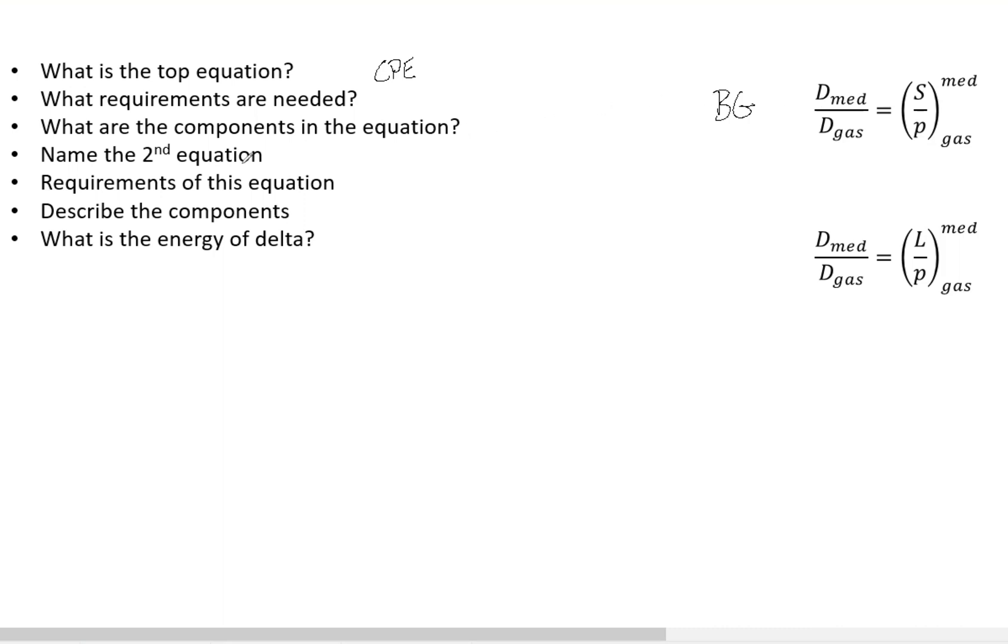Now what is the second equation? This is the Spencer-Attix cavity theory. Now what are its requirements? So we still need CPE or transient CPE.